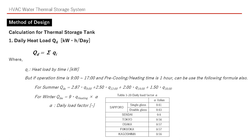We introduce the key formulas for design. First is the daily heat load Qt. Simply said, Qt is the summary of load for each hour. But we can calculate heat load only for 9, 12, 14, and 16 o'clock. Therefore, it can be estimated using the following formula.